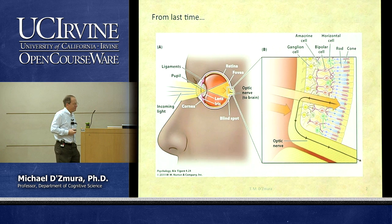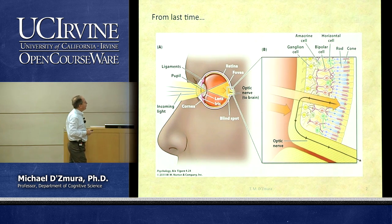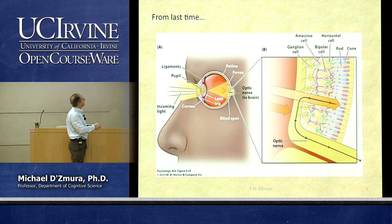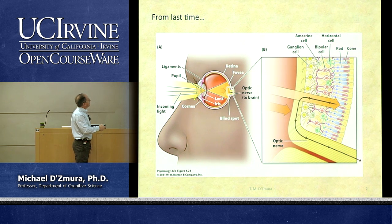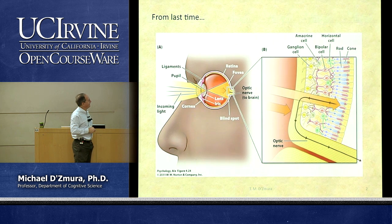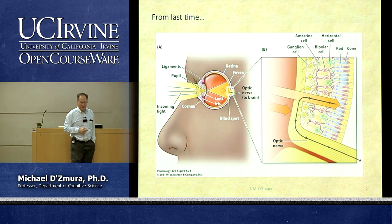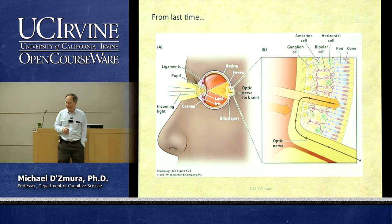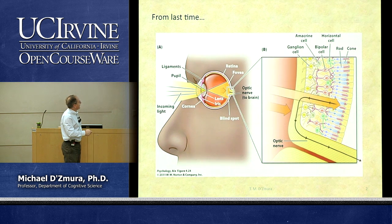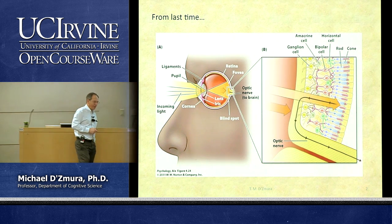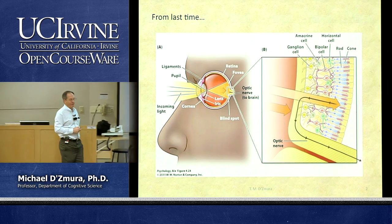We're talking about vision. Recall from last time that light enters the eye and meets the curved corneal surface where there's a lot of focusing going on. It passes through the pupil, whose size is regulated by the iris, and the light then hits the lens. In younger people, age 44 or less, the lens changes shape.